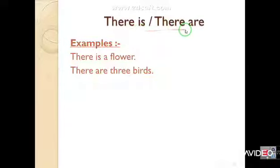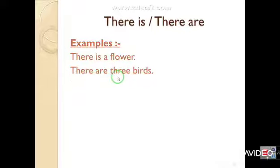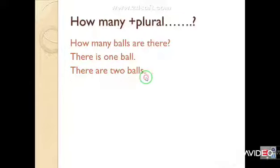Plural means more than one thing. For example: 'There is a flower' — here we are talking about one flower. Number two: 'There are three birds' — how many? We use 'how many' when we want to ask about the number of anything, and after 'how many' we use the plural, which means we add 's'.